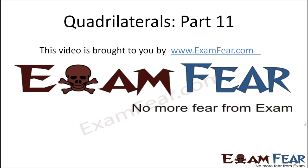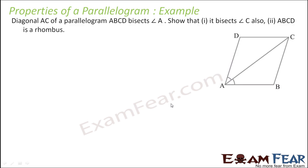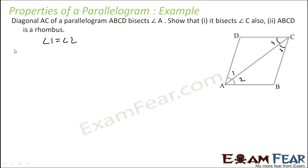Hello friends, this video on quadrilaterals part 11 is brought to you by examfear.com. Pretty easy question: diagonal AC of the rhombus ABCD bisects angle A. So this is angle 1, angle 2, angle 3, and angle 4. AC bisects angle A, that is angle 1 is equal to angle 2 — that is given.